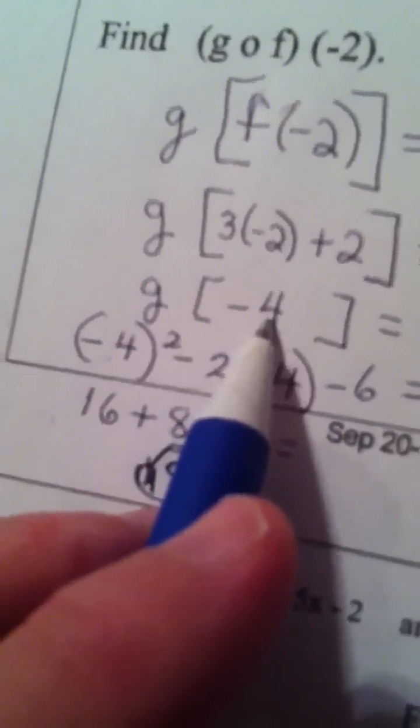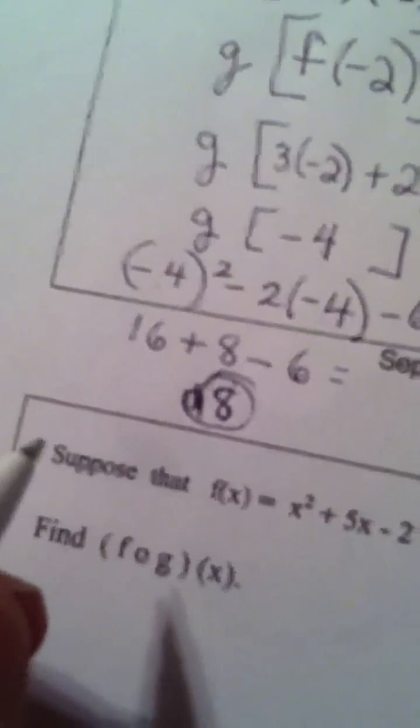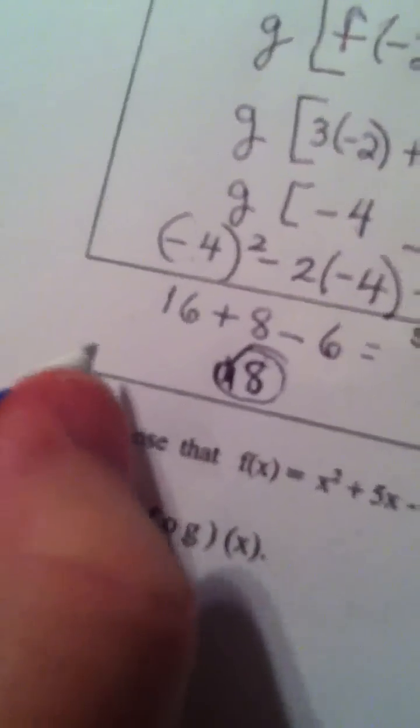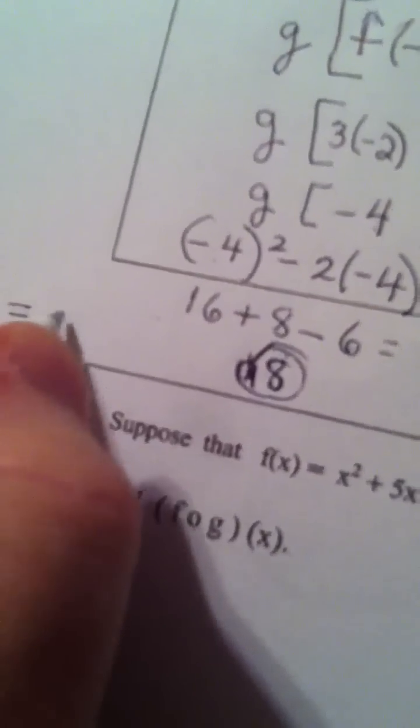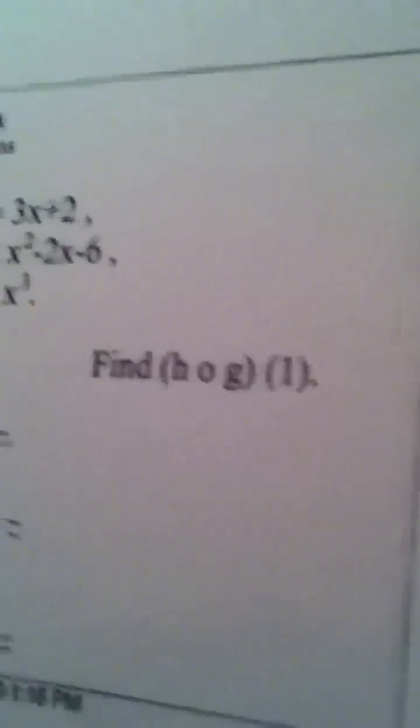So negative 4 is not your answer. Negative 4 is what you got out of f to plug into g to get your final answer. So the answer to our first question is 18. Now let's try this part.